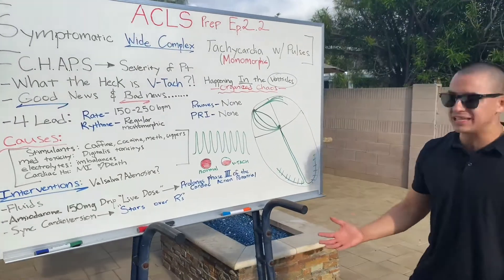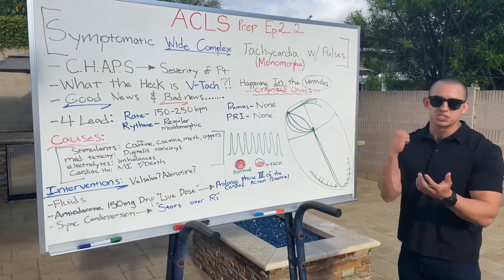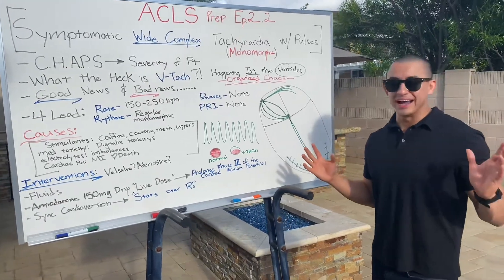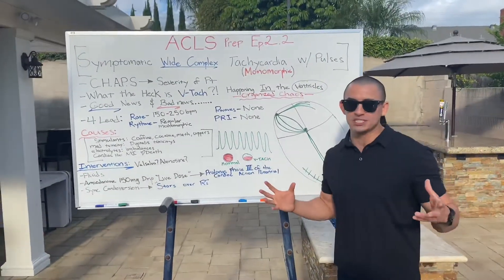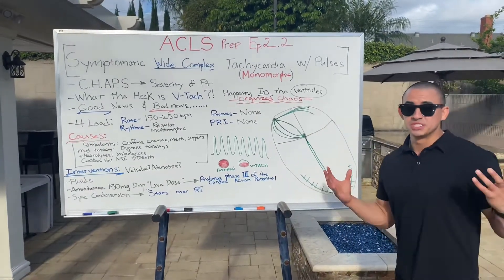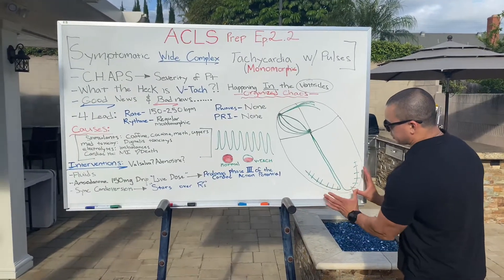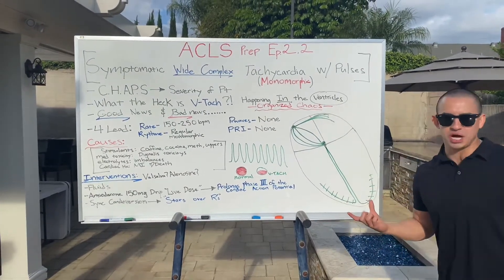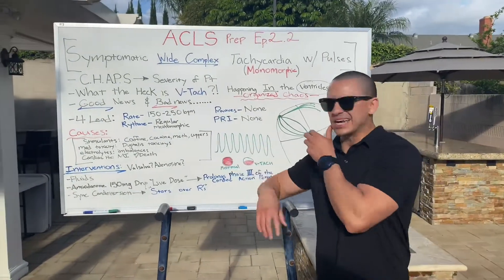In ventricular tachycardia with pulses, the SA node and AV node are not doing their job — they didn't even show up. So the Purkinje fibers assume the role of primary pacemaker, essentially saying 'I don't want to die, I'm going to do the work.' They fire incredibly hard — at a rate of 150 to 250 — which is not sufficient to sustain life. That's essentially what V-tach is.